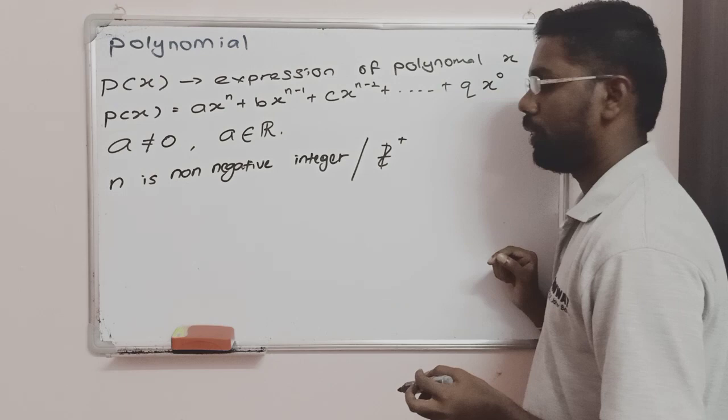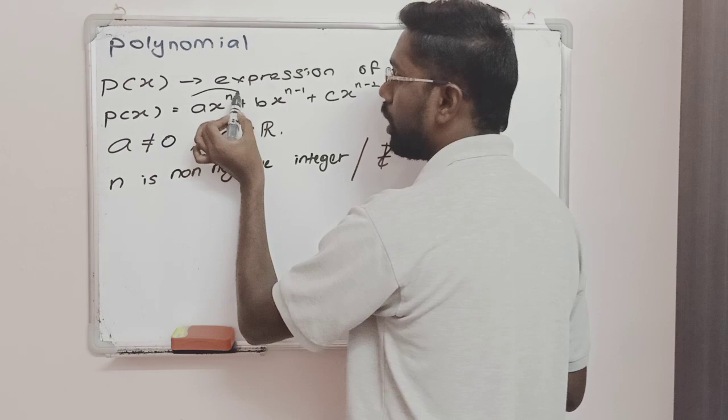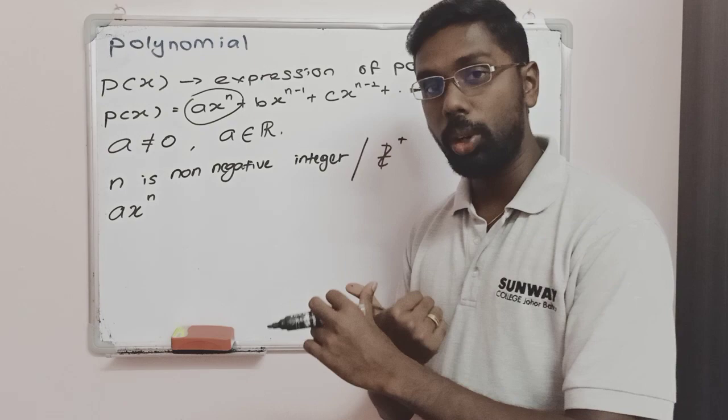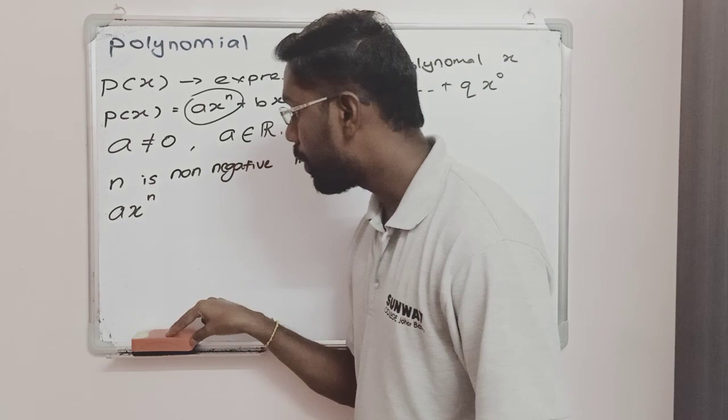You can also say n is a positive integer or zero. Now, for the term ax^n, the n value can vary from 0, 1, 2, 3, and so on.